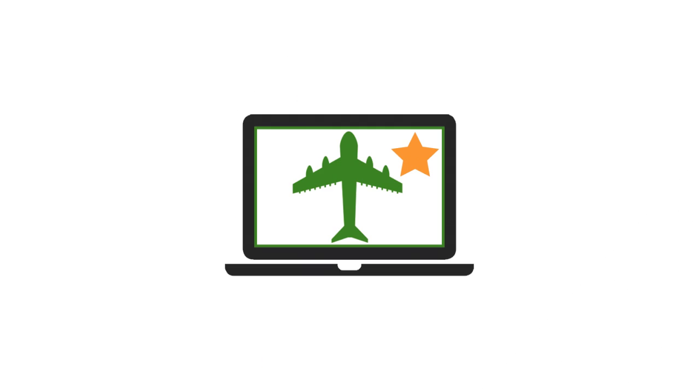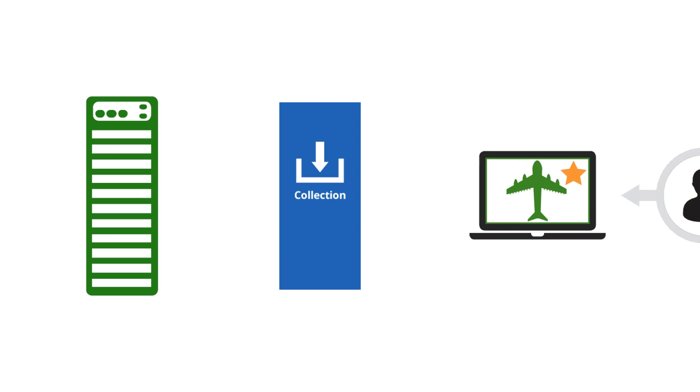For example, if you run a loyalty program for your airline, you might want Google Analytics to keep track of your customer's frequent flyer status by collecting this information when a user logs onto your website. It is possible, using additional JavaScript code, to collect this data and send it back to Google Analytics servers with the rest of your user interaction data.